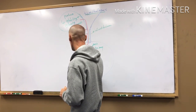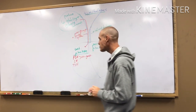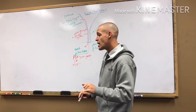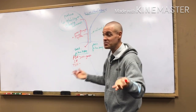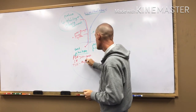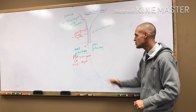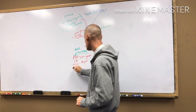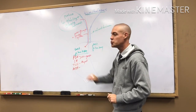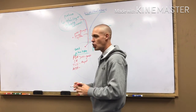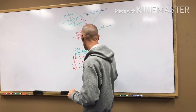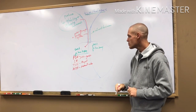Another hormone is TSH — thyroid-stimulating hormone. It stimulates the thyroid to produce hormones. Then we have ACTH — adrenocorticotropic hormone. It's a long name, but it stimulates the adrenal cortex.